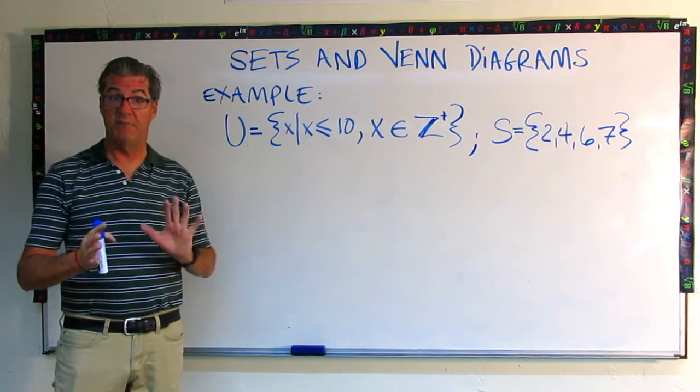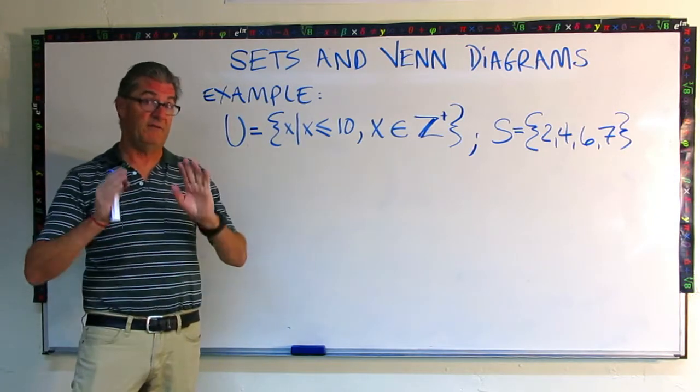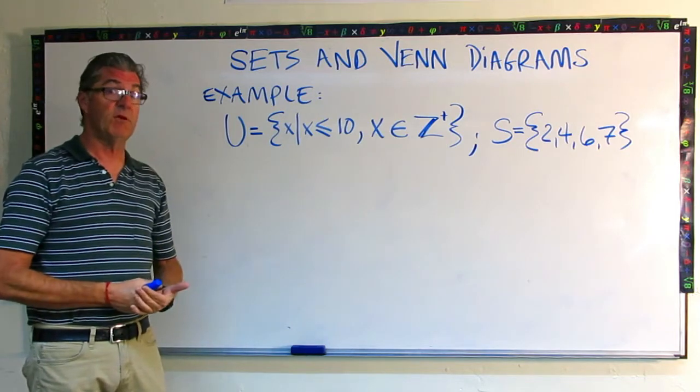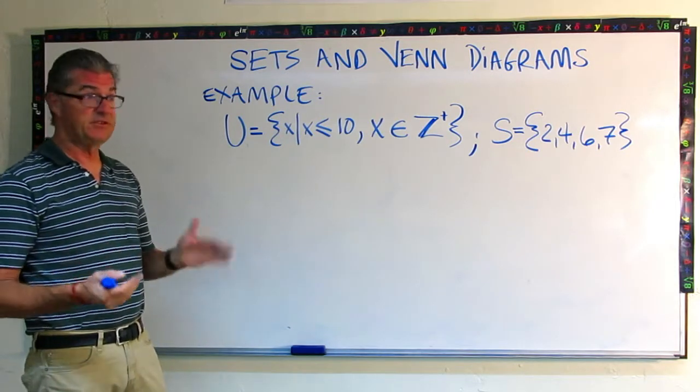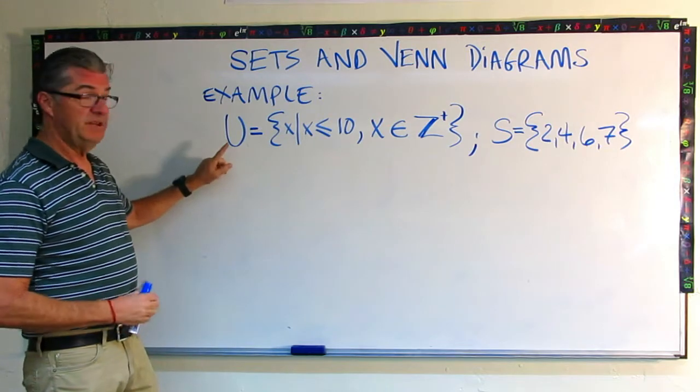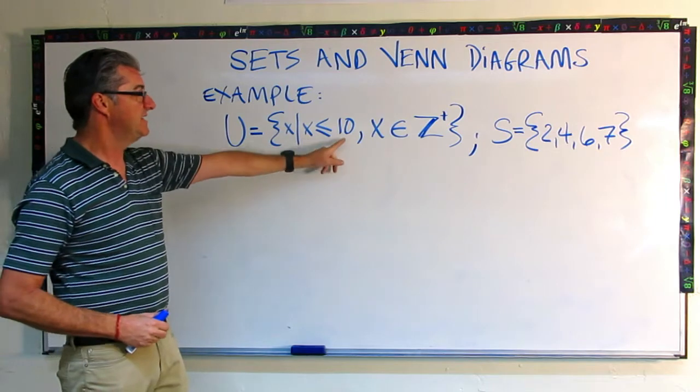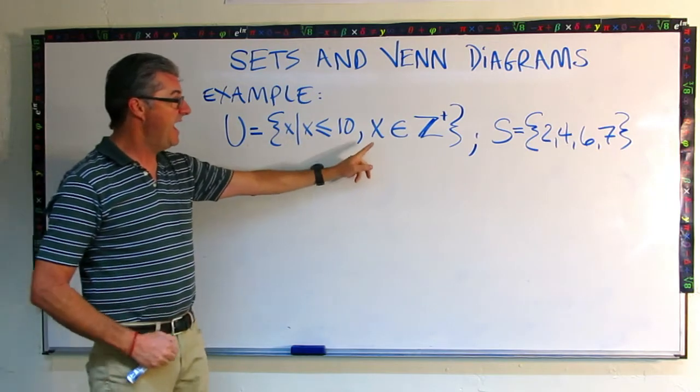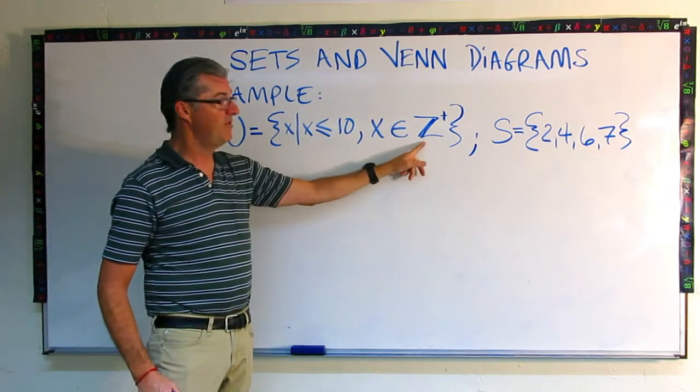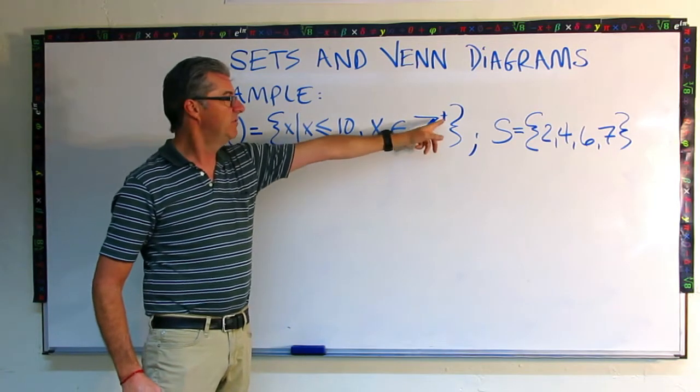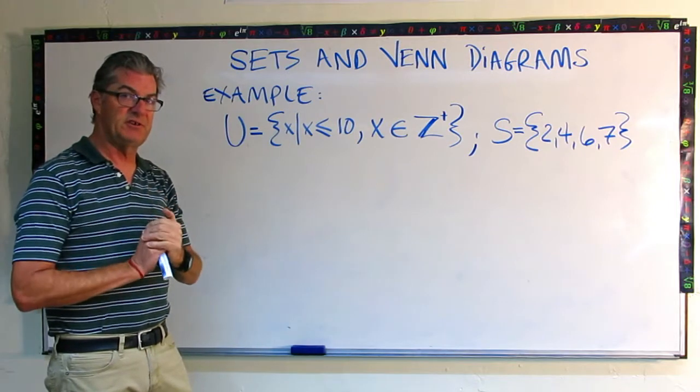Let's do a straightforward example. So the first thing we need before we can define and draw our Venn diagram is we need to know what universal set we're working with and then what our subset is. So I've put that up here. In this problem, our universal set is a set of all x such that x is less than or equal to 10 and x is a member of the positive integers. Z is the symbol for integers. We put a plus there that means we only want the positive integers.